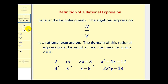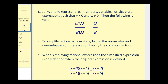Let's take a look at simplifying rational expressions. If we have a rational expression in the form of u times w divided by v times w, there's a common factor of w between the numerator and denominator. Since w divided by w equals one, this w simplifies out and we're left with u over v. To simplify a rational expression, we factor the numerator and denominator completely and then simplify out the common factors. The simplified expression is only defined when the original expression is defined.